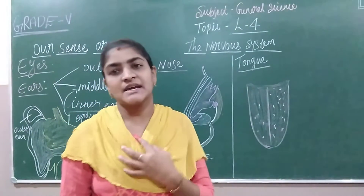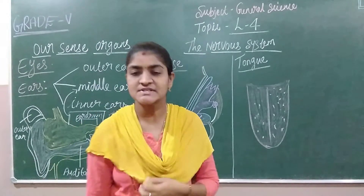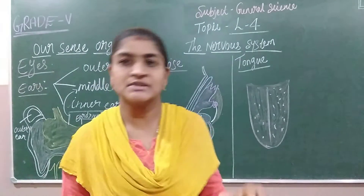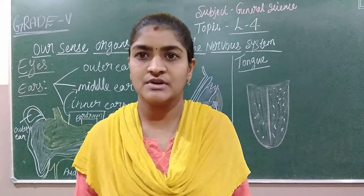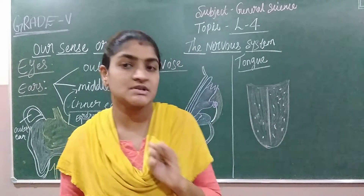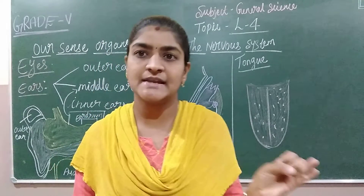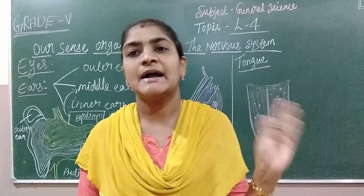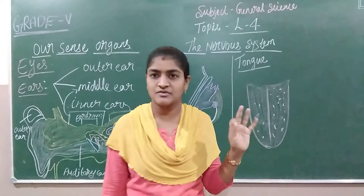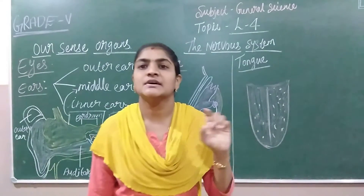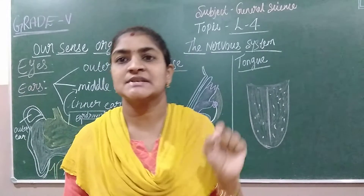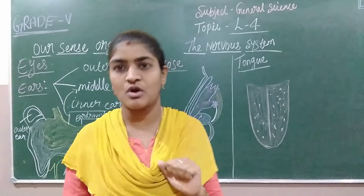Last class I explained about the nervous system, and I also drew the structure of a nerve. It is having dendrites, a cell body, and an axon — these are the three parts of nerves. The nervous system has a cell called a neuron.